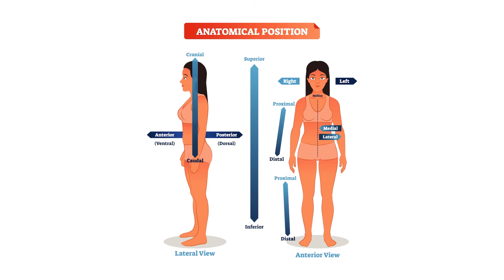The next directional terms are proximal and distal. Proximal usually refers to a structure or body part closer to the trunk, while distal indicates a body part that is away from or furthest from the trunk. You'll most often see these terms in the context of the upper and lower limbs, covered in depth in the MSK lectures, and they will become more familiar as you progress through each section.